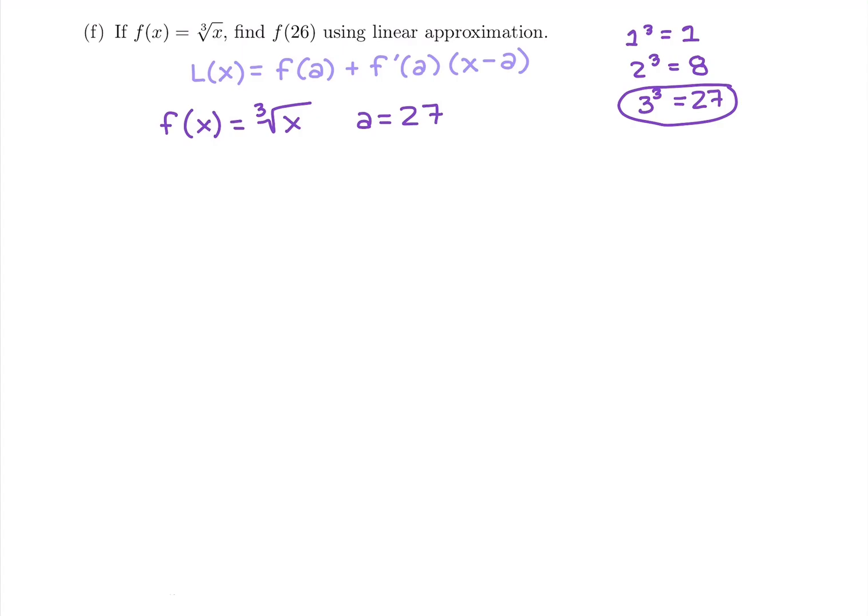So we'll use that to go through our three steps for linear approximation. The first step is evaluating f of a. So our a is 27. Since 3 cubed is 27, the cube root of 27 will give us 3. So f of 27 is 3.